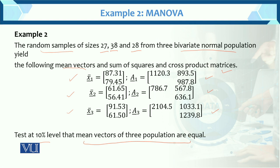Test at the 10% level that the mean vectors of the 3 populations are equal. So what we have to test is whether these mean vectors of the 3 populations are equal. The sample sizes are: 27 for the first, then 38 and 28.